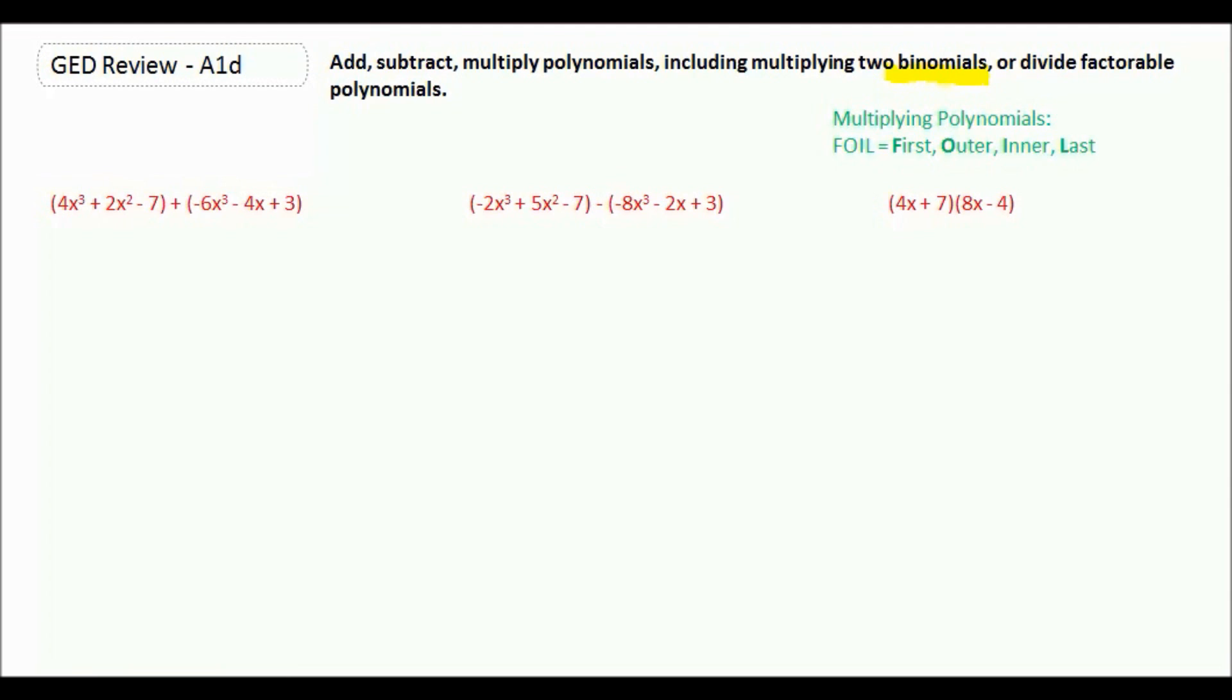Here we're going to add two trinomials together. Our like terms are 4x cubed and negative 6x cubed. We have 2x squared, but no 2x squared over here. We have a negative 7 and a positive 3, and then a negative 4x.